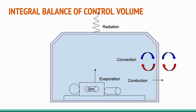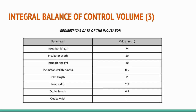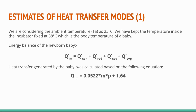Here we have tried to show the heat transfer in an incubator. We can see that evaporation is happening from the baby's body, conduction and radiation are taking place through the system walls, and convection is happening with the airflow inside. We have assumed a fiberglass wall incubator for our calculations, and the physiological data of the baby is as shown. The incubator has been assumed to be approximately a cuboid with dimensions 74 x 50 x 40 cm.